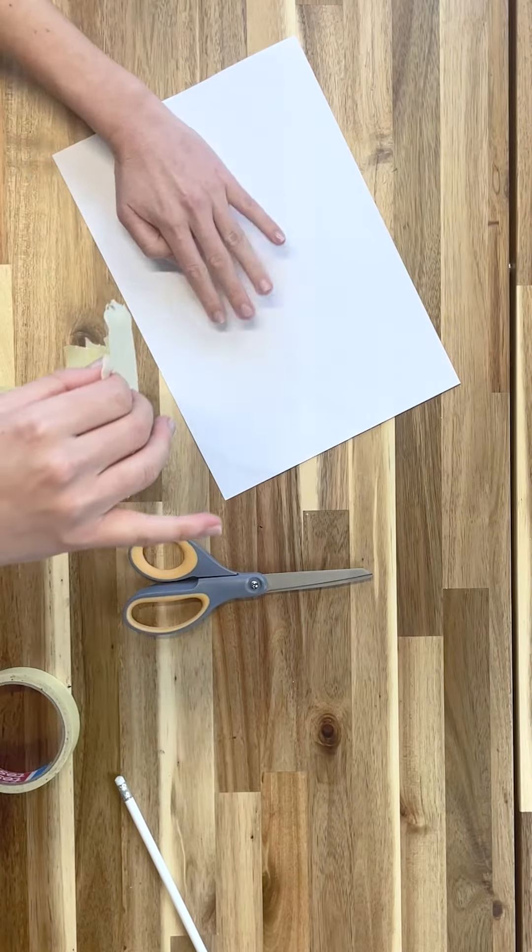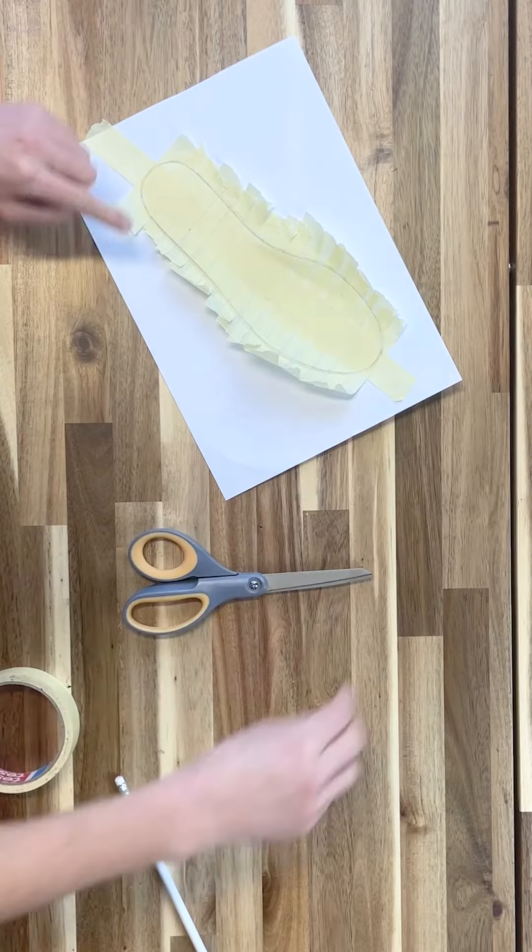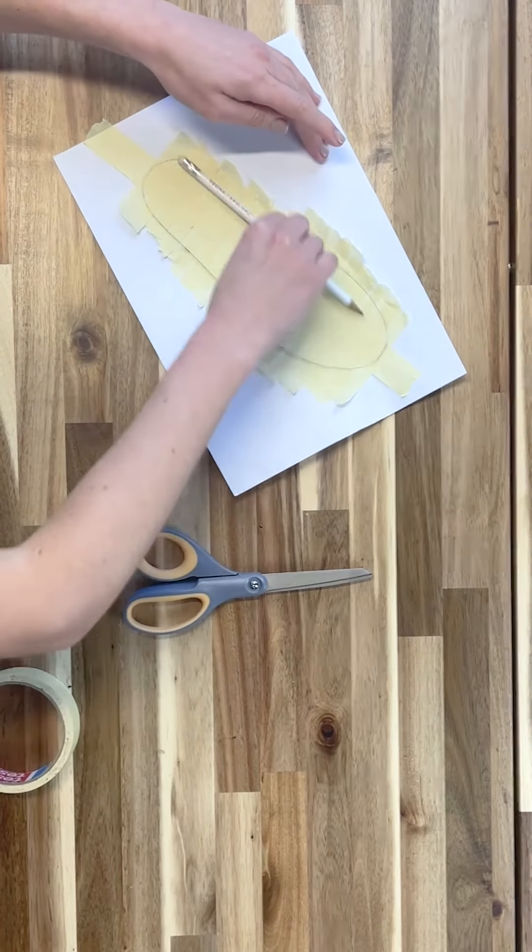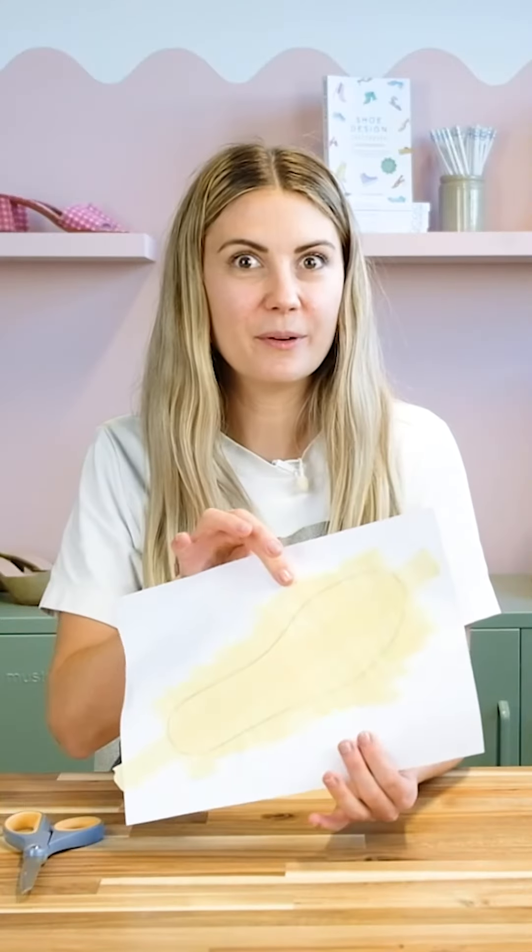And then we're going to lay it flat on the paper by pulling those ends like that. I usually use my pencil to just seal it down. You can see pretty clearly the line that we've got on there.